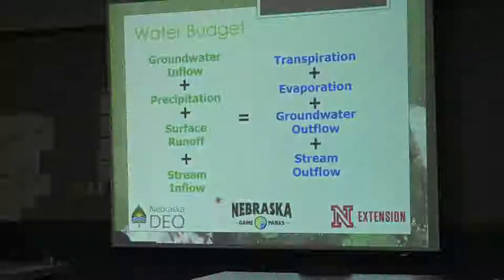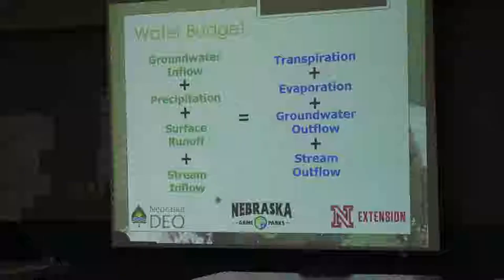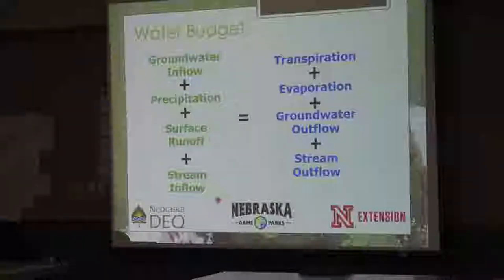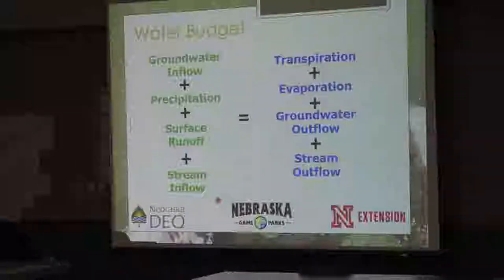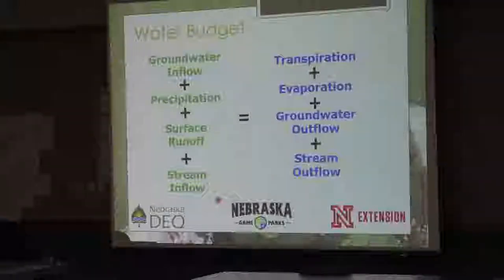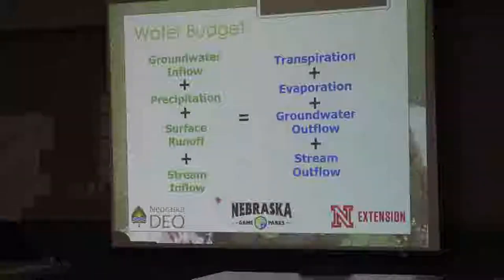A water budget is important to understand, whether for a lake, a stream, or even groundwater. You've got inputs: inflow, plus precipitation, plus runoff, plus stream inflow. On the other side are all the outputs: transpiration, evaporation, groundwater springs that outflow to surface water, and stream outflow carrying water away.